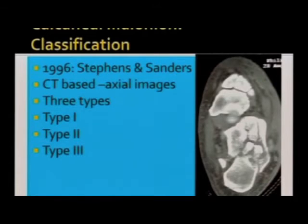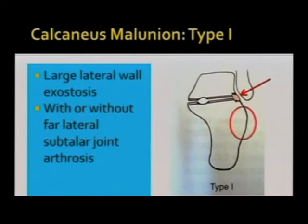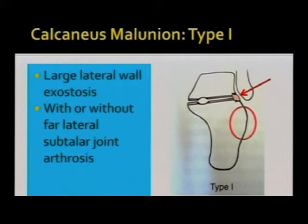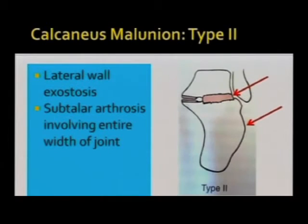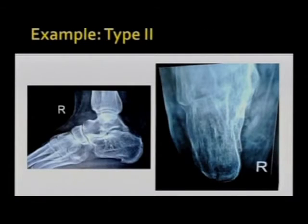Typically we classify this malunion as per Steffin and Sender. A CT-based classification is used with three types. Type 1: patient has a large lateral wall exostosis with fair or minimal subtalar joint arthrosis, and the traditional treatment is simple excision of the bony bump — exosectomy and tenolysis of the peroneal tendon. Type 2: lateral wall exostosis plus subtalar arthritis involving most or all of the joint, and the treatment is exosectomy plus arthrodesis of the subtalar joint.